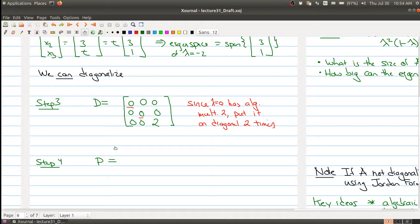So P, now what you want to do is, because the algebraic multiplicity is 2 and the geometric multiplicity is 2, put the basis for the eigenspace in the corresponding columns. So here we would have 1, 0, 1, 0, 1, 0.